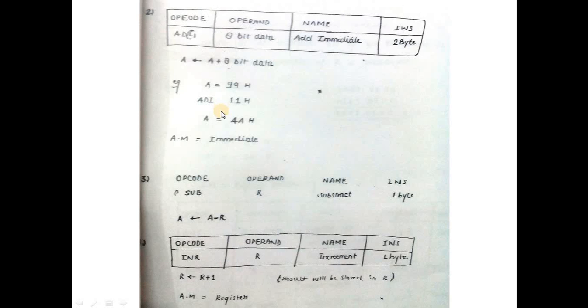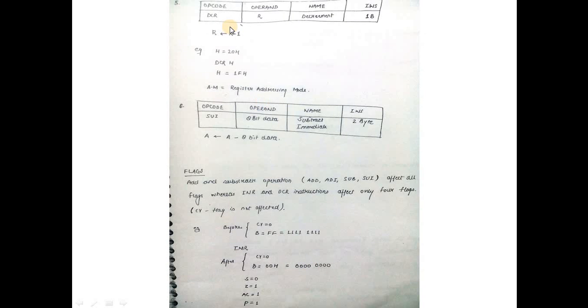Increment and decrement: INR increments the data present in the register by one. For register, it's a one-byte instruction. The most important thing: carry flag is not affected for increment and decrement operations, no matter if other flags are affected.